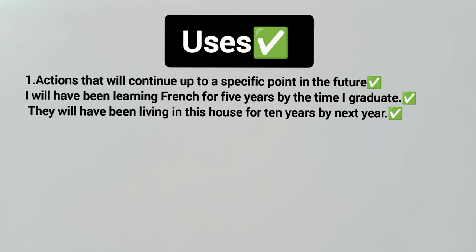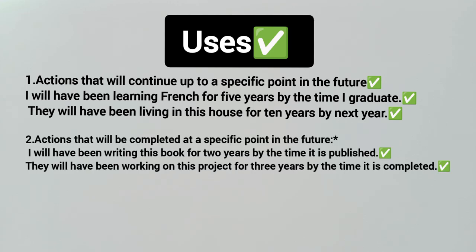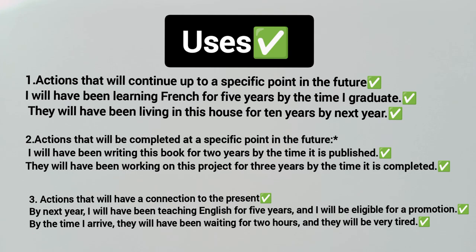Another example: 'I will have been studying English for two years by the time it is published.' Also: 'They have been working on this project for three years by the time it is completed.' These show actions continuing until a specific future event.